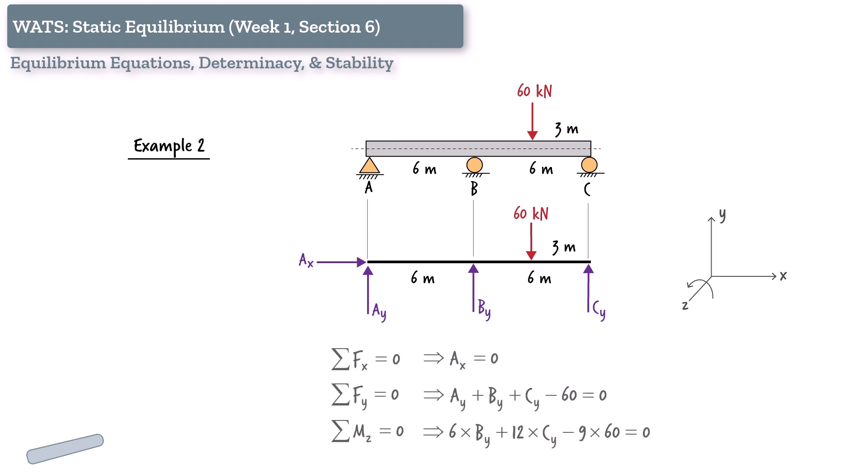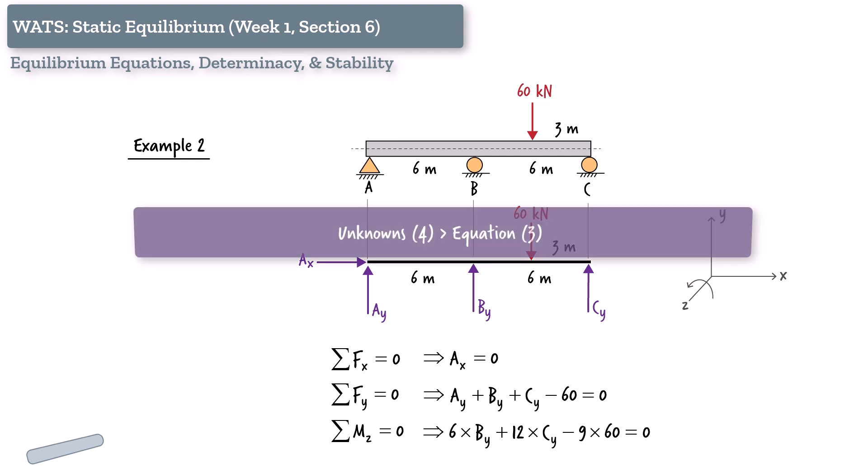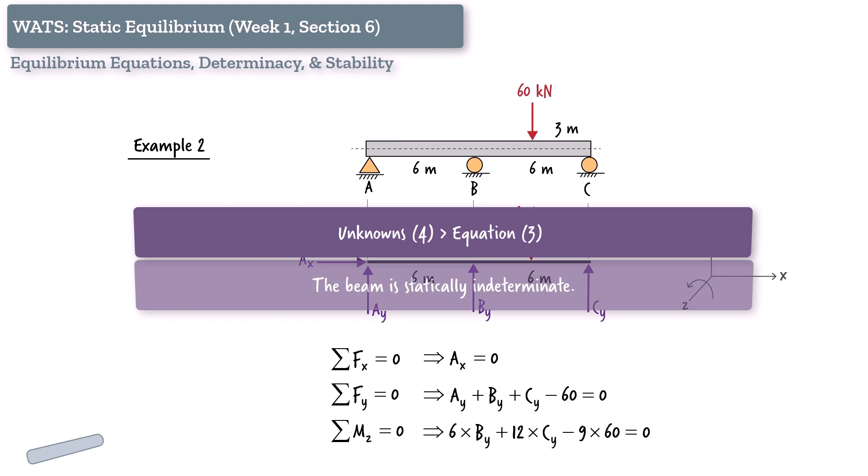But we still only have three equilibrium equations, so we're dealing with four unknowns and only three equations. Since we are not able to solve for all the unknowns using these equations, we refer to this as a statically indeterminate system.